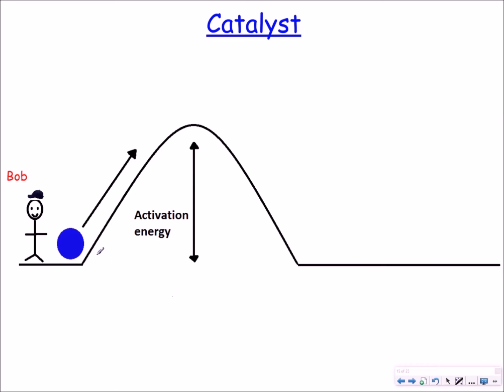So our fourth factor is using a catalyst. Now I've got Bob over here to help me explain this. What Bob wants to try and do is to push this ball across this slope over here and let it roll down. I don't know why Bob would do that. He's a bit weird. But anyway, so he's going to push it over here. Once the ball gets to about this point then he can stop pushing it and the ball will just roll down.